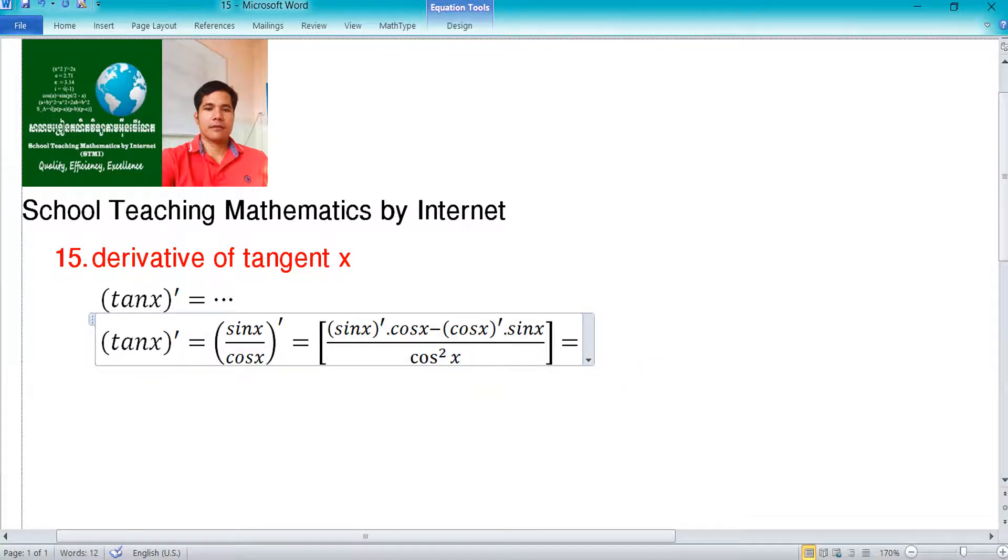We get cos square x, and then here is cos x because derivative of sine x equals cosine x times cos x minus minus sine x times sine x.